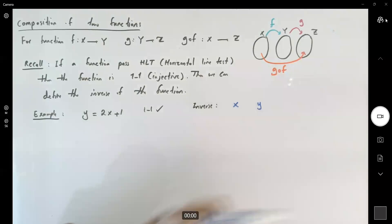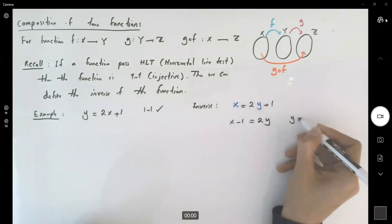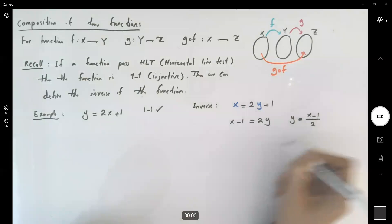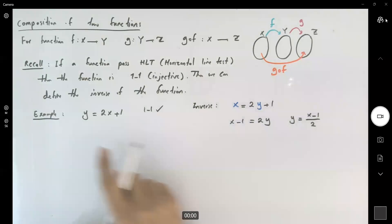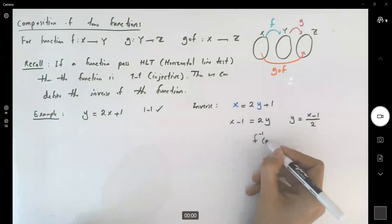So x is now 2y plus 1. That's one of the methods. Then you try to isolate your y. You get x minus 1 equals 2y, and y becomes x minus 1 divided by 2. So if your function is denoted by f, inverse of f is equal to x minus 1 divided by 2.